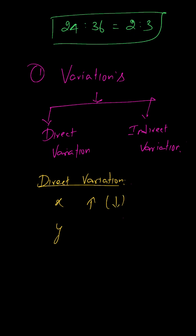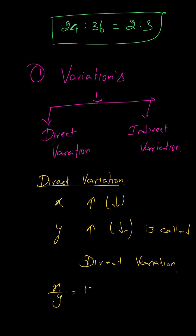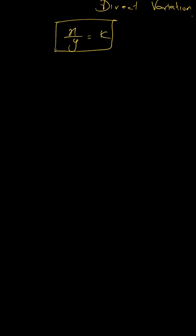Direct variation: two quantities x and y are related to each other such that when x increases or decreases, the corresponding quantity y also proportionately increases or decreases in the same way. This is called direct variation. The formula is x divided by y is equal to k, where k is a constant.